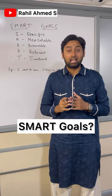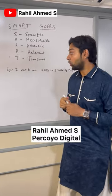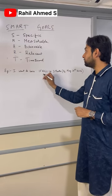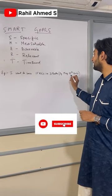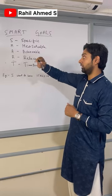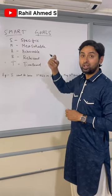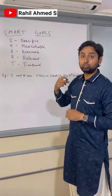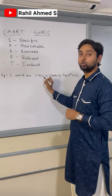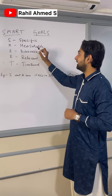What are SMART goals? Let's understand with an example. The example is: I want to lose 15 kgs in three months, that is by May 30th, 2024. In SMART, S stands for Specific — our goal needs to be specific. Here, the specification is losing 15 kgs, so that is specific.